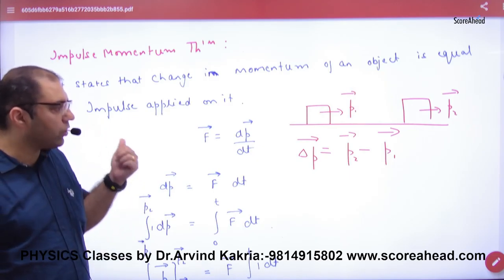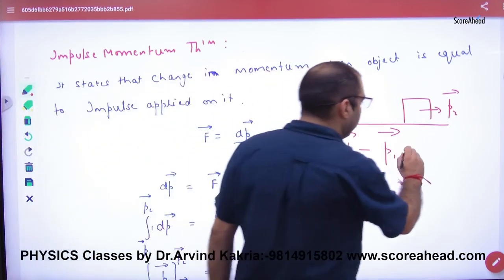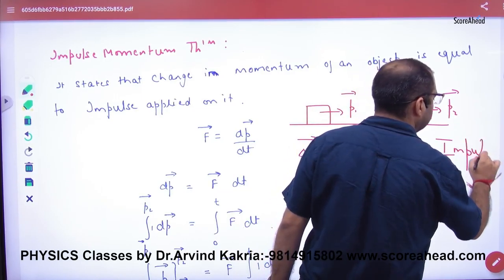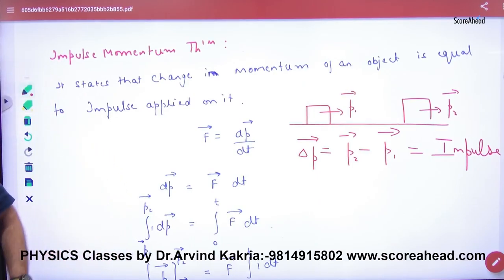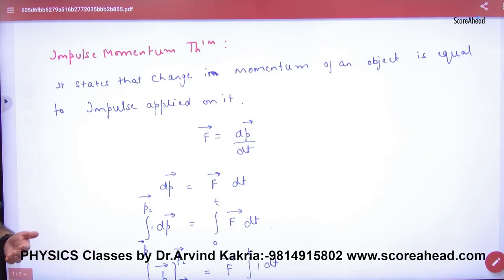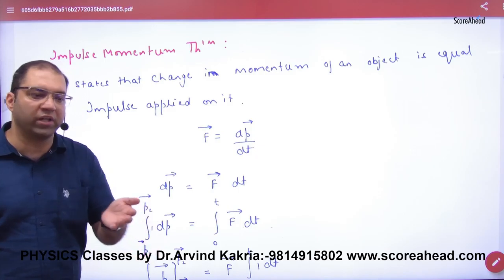According to this theorem, change in momentum equals impulse. Impulse is change of momentum. We have to prove this formula when the body changes, change of momentum equals impulse.